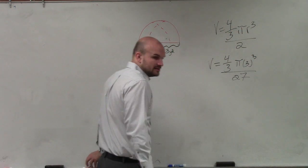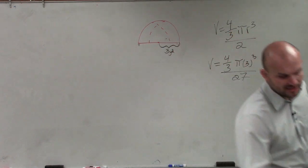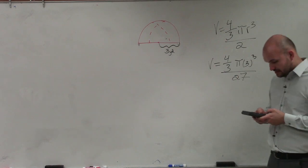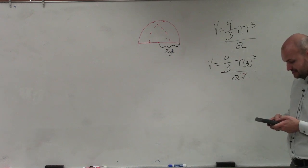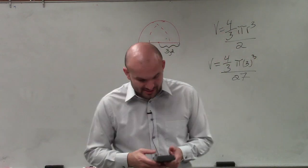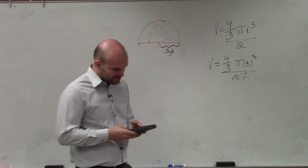So now, I'm just going to take my calculator and plug all this information in. I'll take 4 divided by 3 times pi times 3 cubed. 3 times 3 times 3 is 27. And then I divide that by 2.